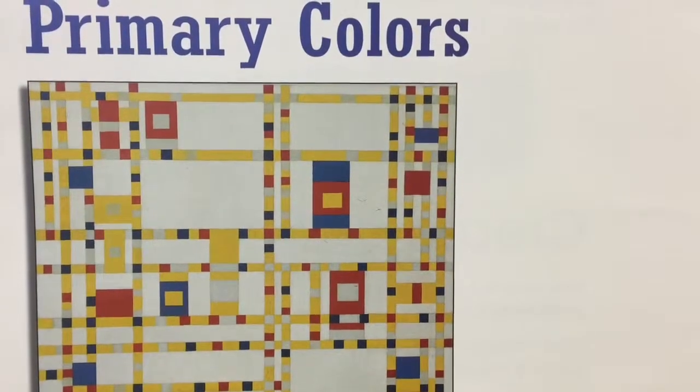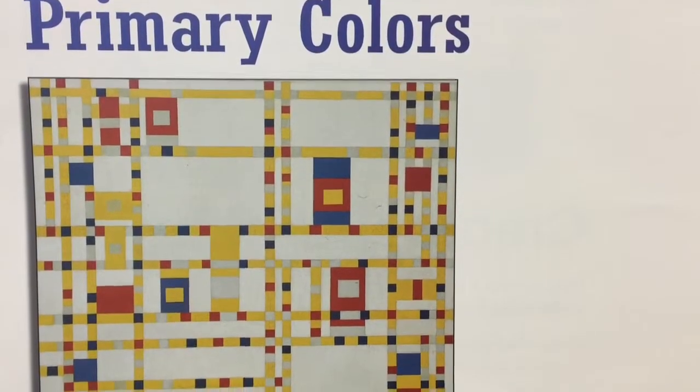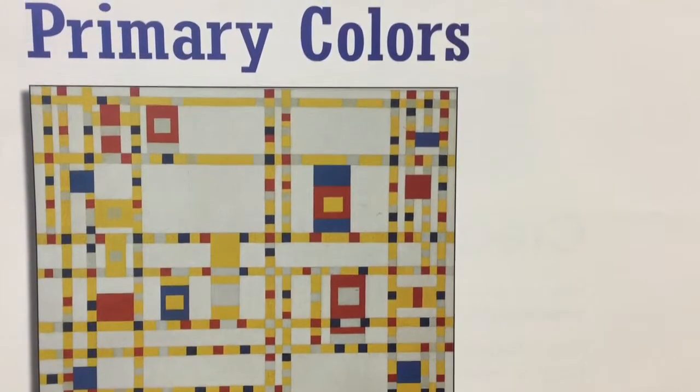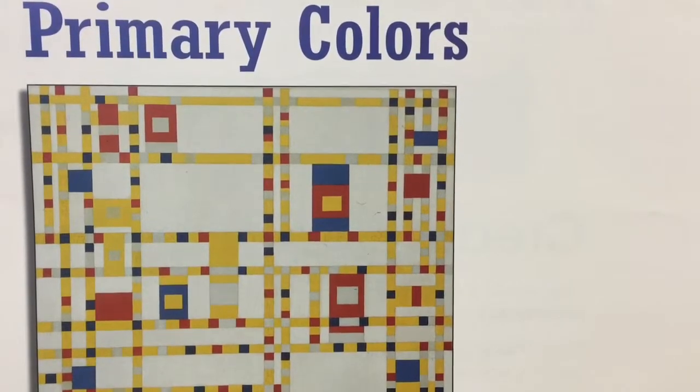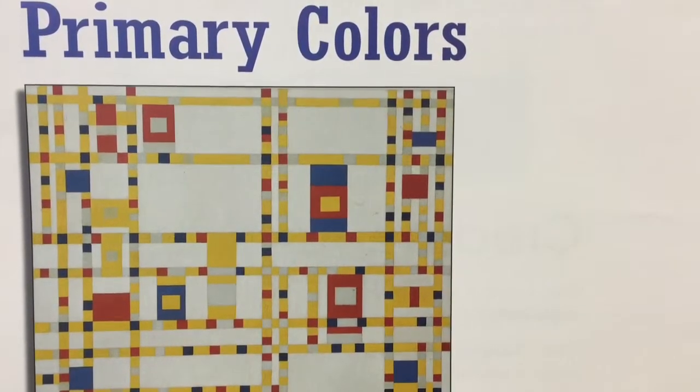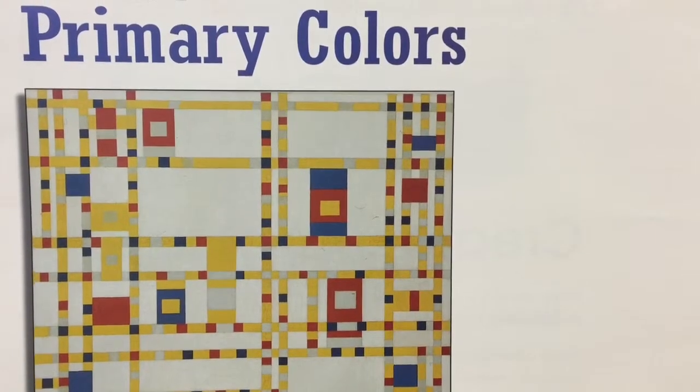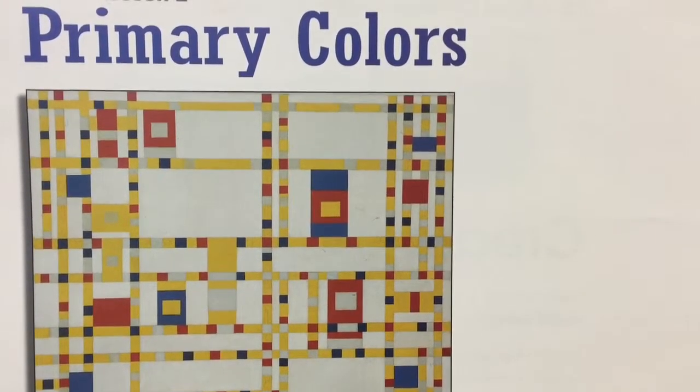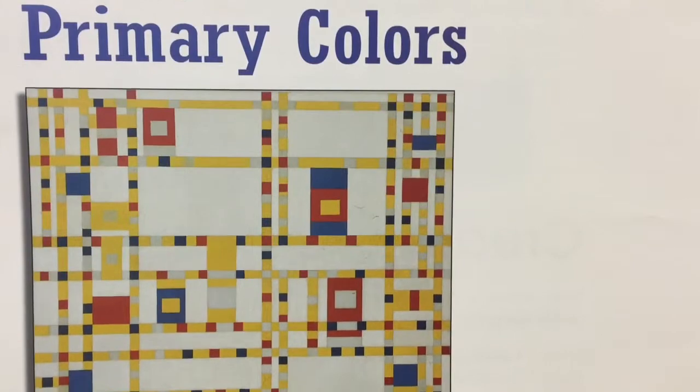For today's lesson, primary colors. This is a painting by Piet Mondrian. It's called Broadway Boogie Woogie, painted in 1942-43. It's an oil on canvas and we can find it at the Museum of Modern Art in New York, New York.